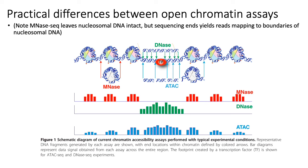You might ask why MNase-seq reads seem to map to the same locations as some ATAC-seq peaks. When you do MNase-seq sequencing, MNase leaves you with genomic fragments entirely bound by nucleosomes. When you do paired-end sequencing, you end up sequencing the ends of nucleosome-bound DNA, and those ends tend to correspond to the regions between nucleosomes. That's why on this diagram the MNase-seq peaks appear to overlap the ATAC-seq peaks.